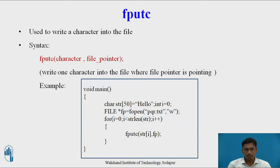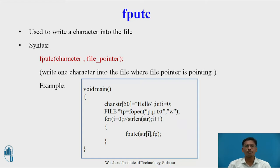The next function is fputc. Here 'f' stands for file, 'put' stands for writing, and 'c' stands for character. This function is used to write one character into the file. The syntax is fputc(character, file_pointer) — it accepts two arguments: the character to be written and the file pointer. It writes one character into the file at the position where the file pointer is pointing.